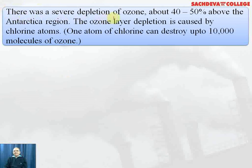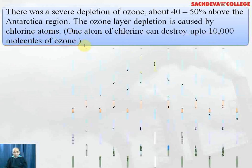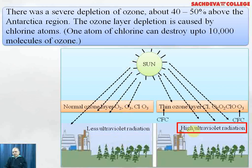There has been a severe depletion of ozone, about 40 to 50%, above the Antarctica region. Ozone layer depletion is caused by the chlorine atom — one atom of chlorine can destroy up to 10,000 molecules of ozone, forming oxygen. You can see the comparison of areas where less versus more ultraviolet radiation is reaching the earth, and more ultraviolet radiation leads to greater adverse effects on humans and other living organisms.